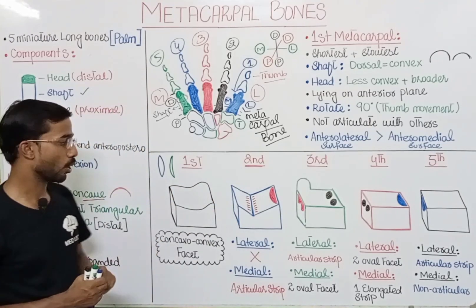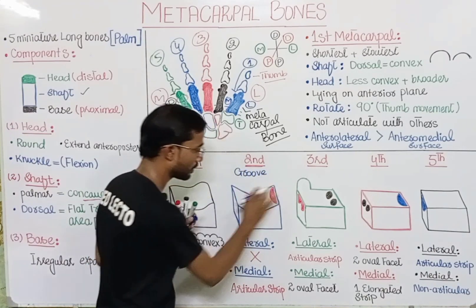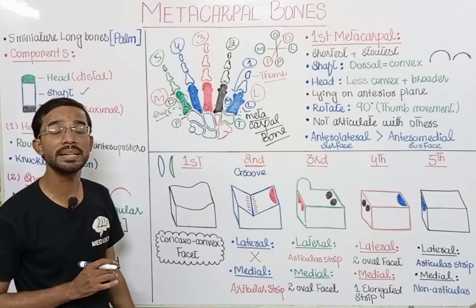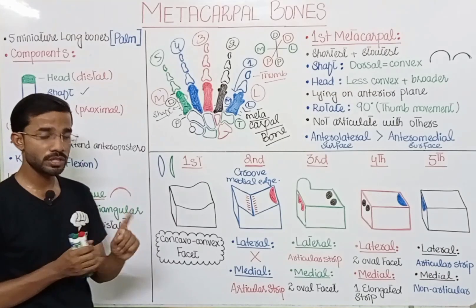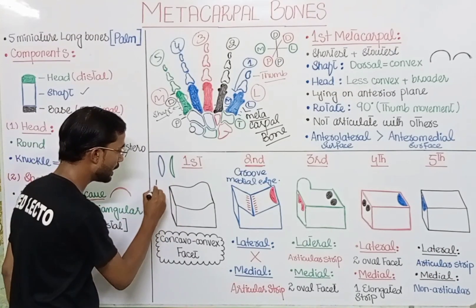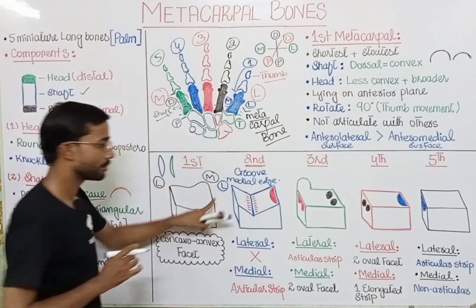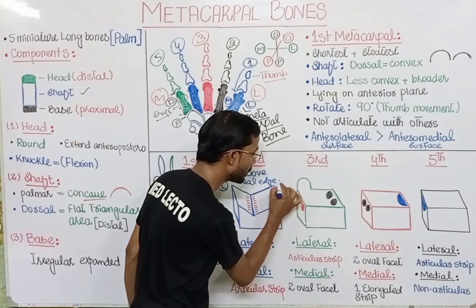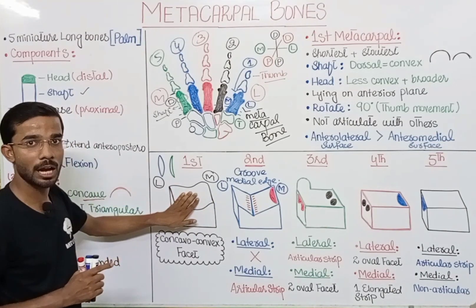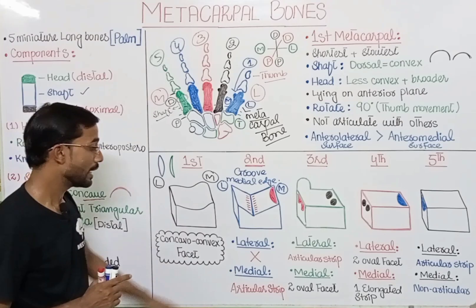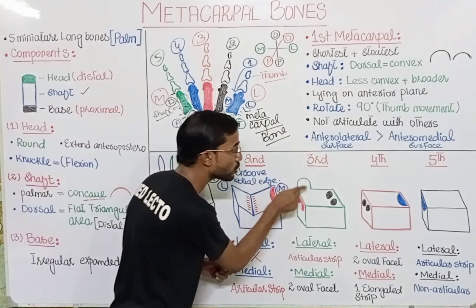The second metacarpal base has a groove, and at the center of the groove you will see a medial edge. At the lateral side there is no attachment to the first metacarpal because the first metacarpal is always separate. At the medial side you will see an articular strip, which attaches to the third metacarpal.